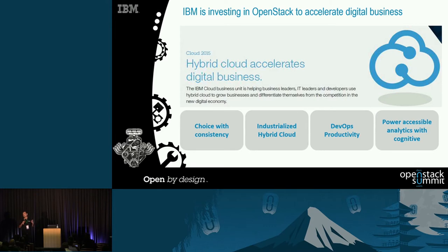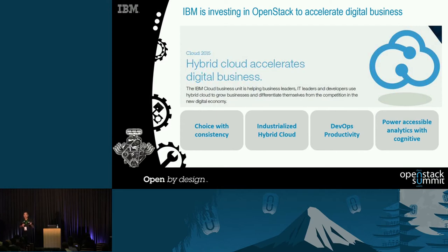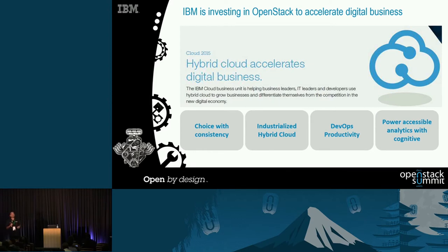Choice with consistency ensures that your experience and the capabilities we provide are the same regardless of the deployment model chosen. This deployment model allows you to build applications that potentially have components on different deployment models — part on the public cloud, part on-premises on a private cloud — building out hybrid applications. With the industrialized hybrid cloud that IBM now offers, that industrialization provides a level of security, stability, and SLAs for you to go production with hybrid applications.